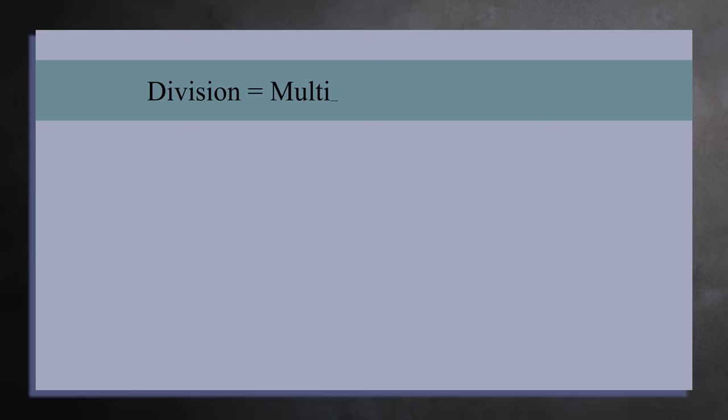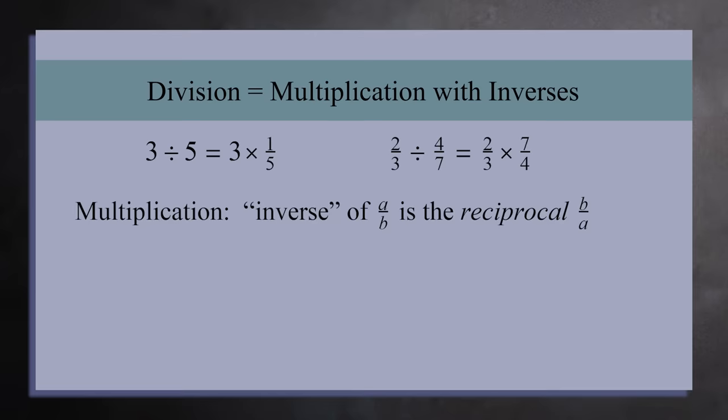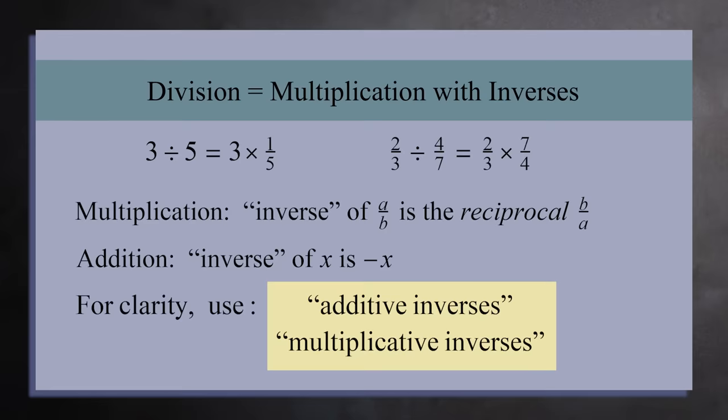Similarly, division is multiplication with inverses. For example, three divided by five is the same as three times one-fifth. And two-thirds divided by four-sevenths can be written as two-thirds times seven-fourths. We see for multiplication inverse means reciprocal, while for addition inverse means the opposite. To keep things clear, we'll often use the phrases additive inverses and multiplicative inverses.